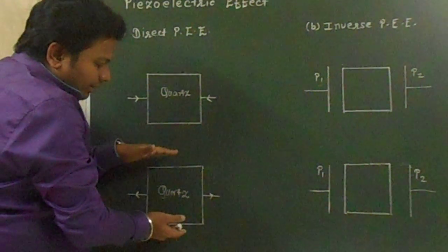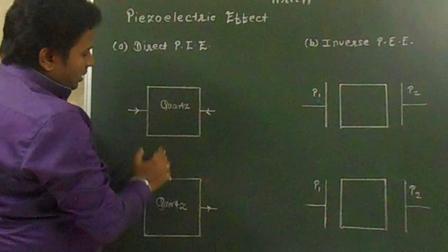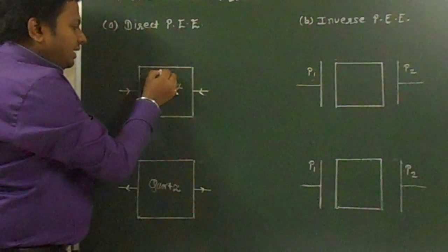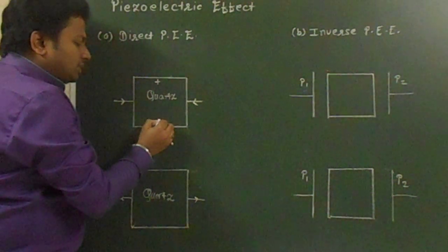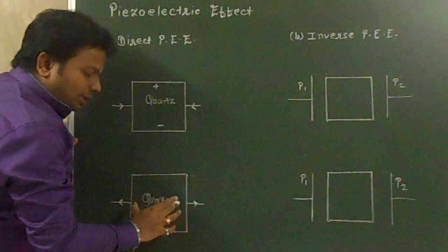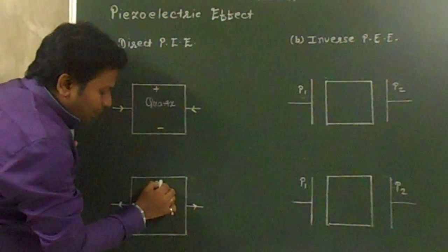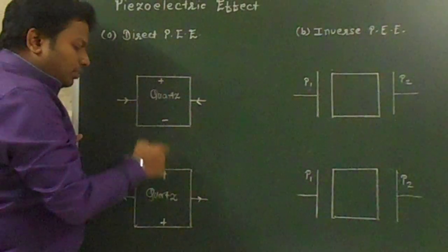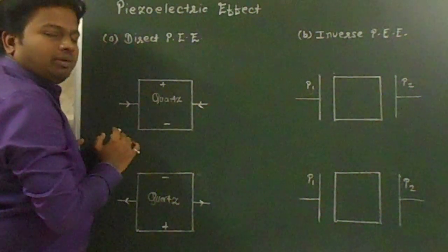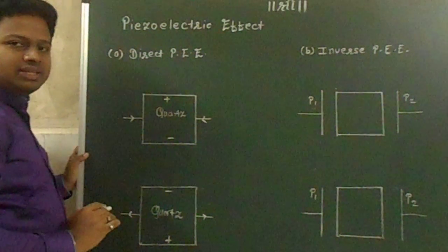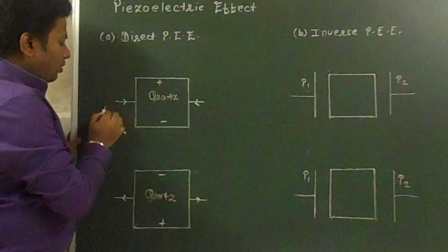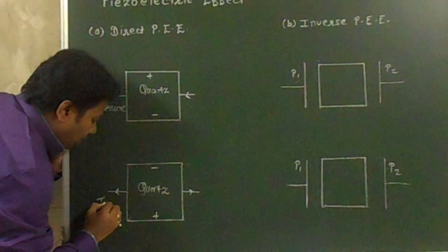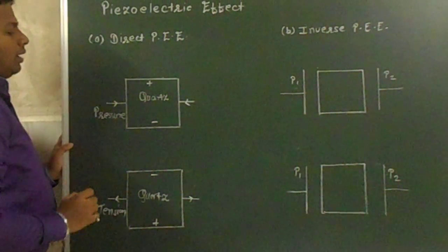When tension is applied, the sample gets compressed along the y-axis. Due to the application of lateral pressure, the upper side becomes positive and the lower side becomes negative. Due to the application of tension, the upper side becomes negative and the lower side becomes positive. In both cases, one side becomes positively charged and the other side becomes negatively charged.